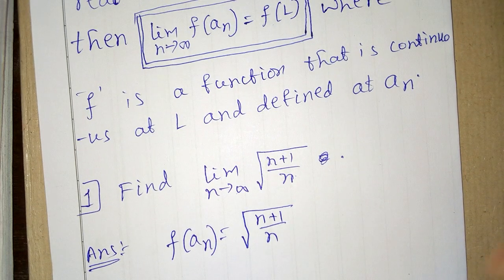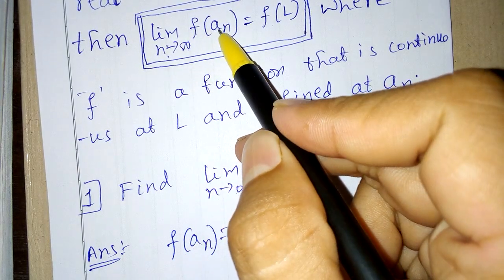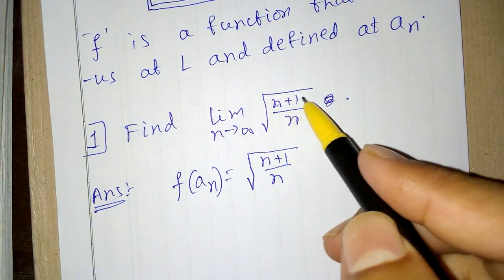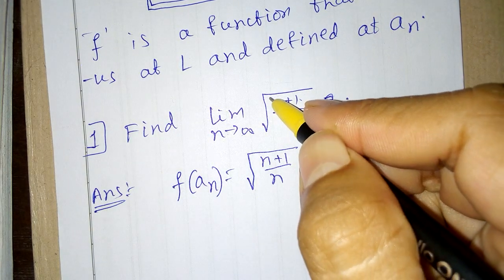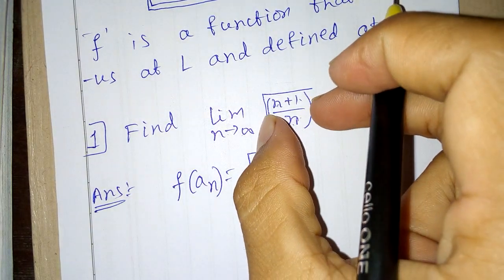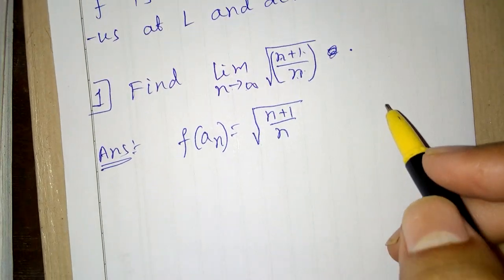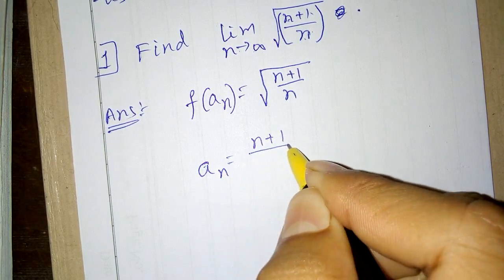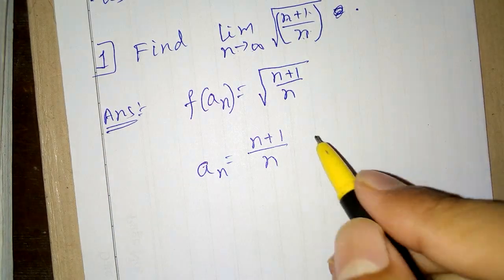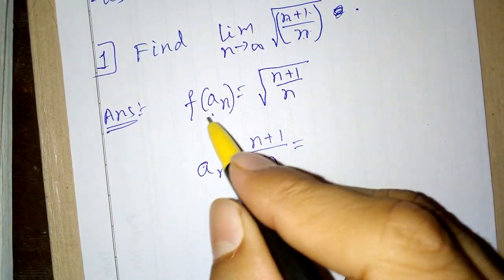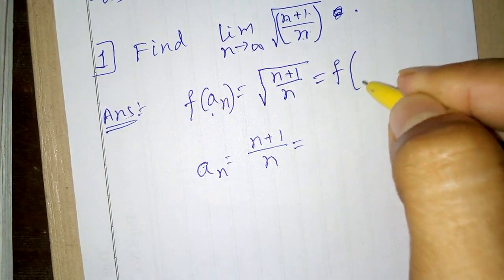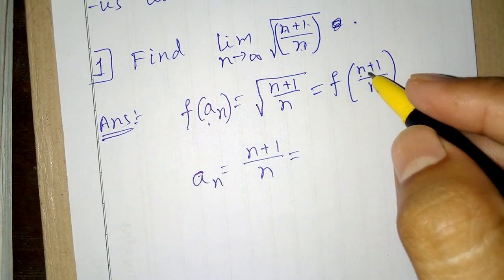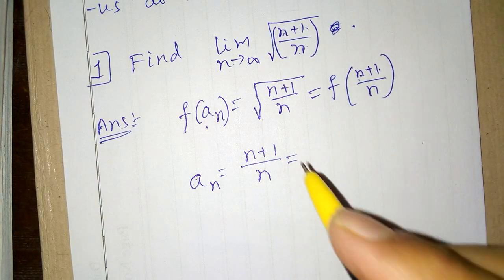We have to find the limit as n tends to infinity of f(An), that is the limit as n tends to infinity of the square root of (n plus 1) divided by n. Here, An is (n plus 1) divided by n, so f(An) is the square root of An, which is the square root of (n plus 1) divided by n.